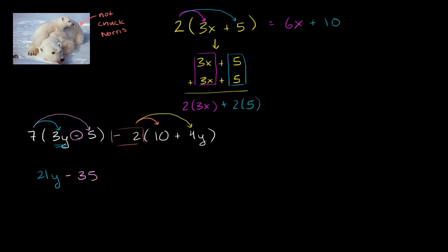So negative 2 times 10, negative 2 times the 10 is negative 20, so it's minus 20 right over here. And then negative 2 times 4y, negative 2 times 4 is negative 8, so it's going to be negative 8y. So let's write a minus 8y right over here.